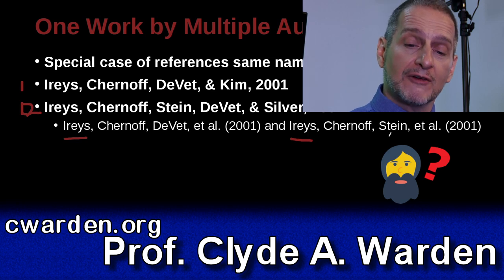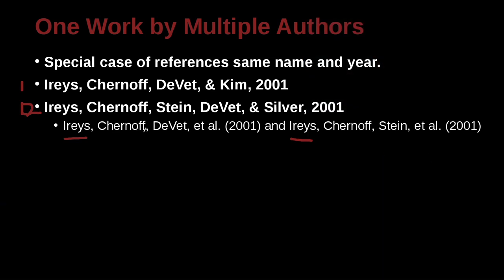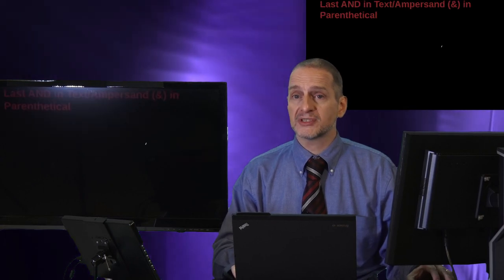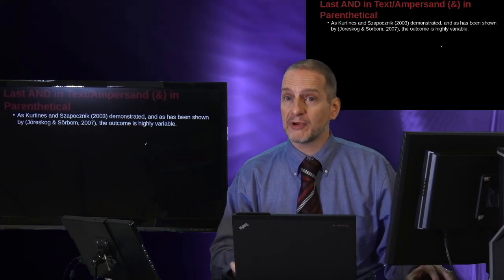So what do we do to solve that problem? We list out the names until there's a difference. Here we have Iries, Chernoff, Yvette, and here we have Iries, Chernoff, Stein. Because here it's Yvette and here it's Stein, this is where the author list changes. So now we are able to look at the reference list at the back and see which paper is which. That's the key point — help the reader understand how to find the correct paper.